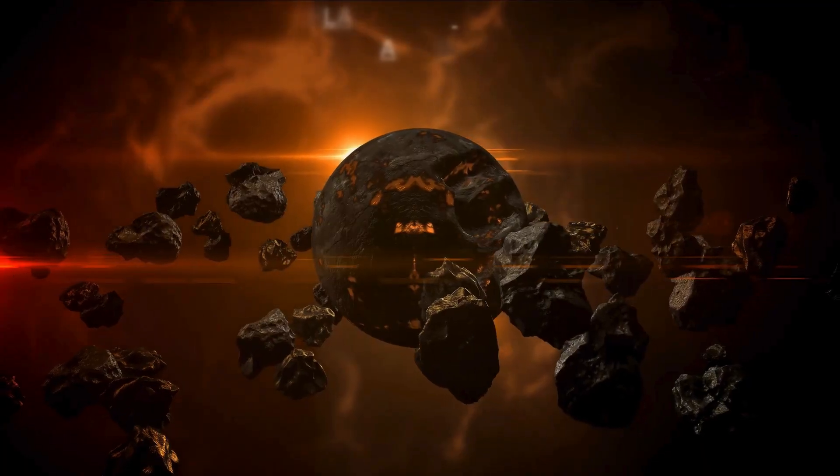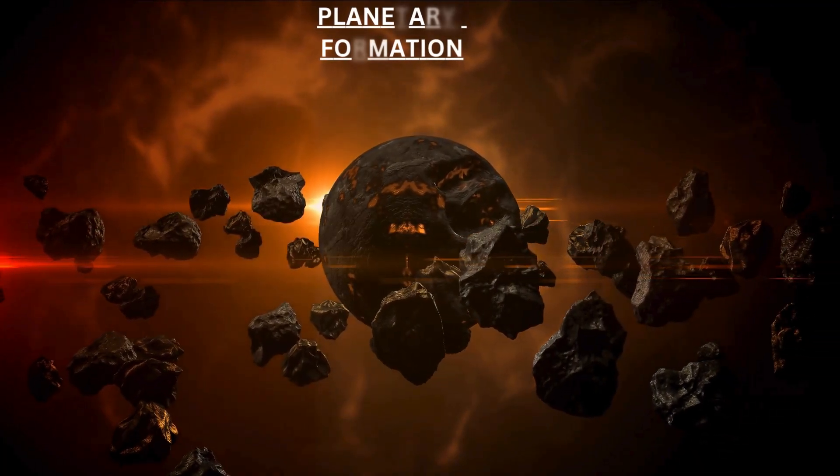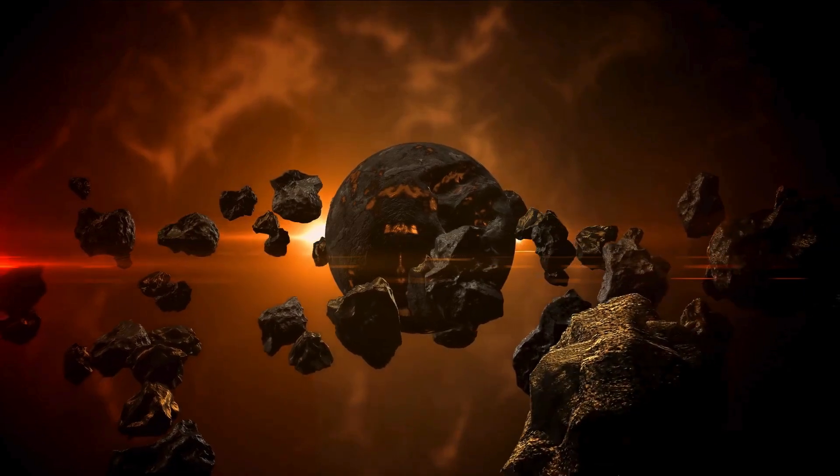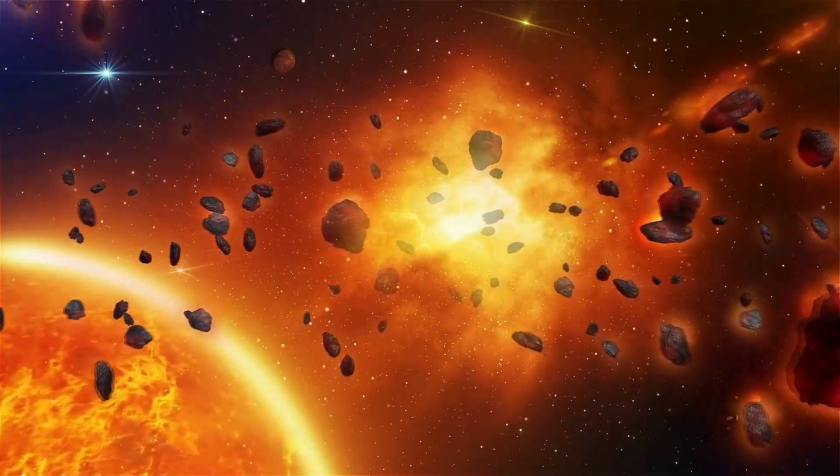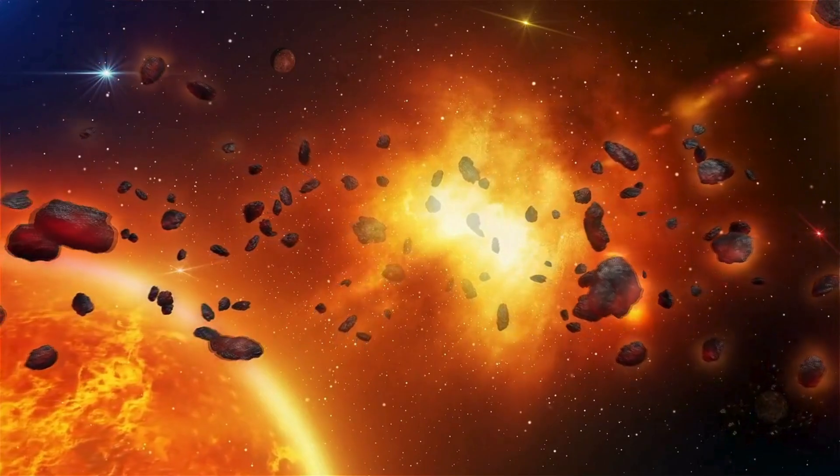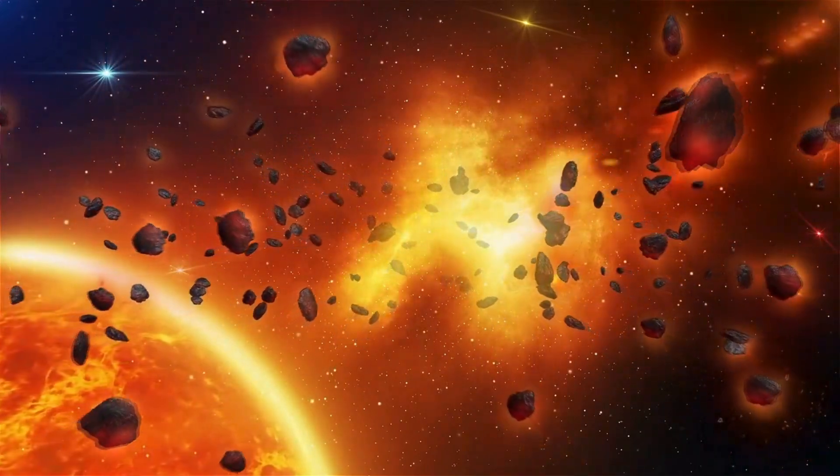The remaining material in the disk around the newly formed Sun concentrated into a swirling pattern. But how?